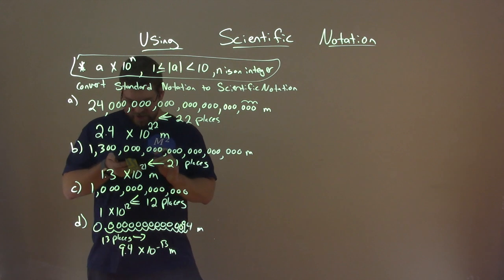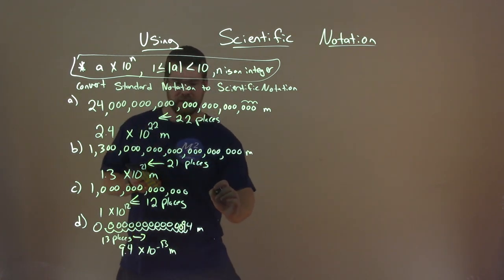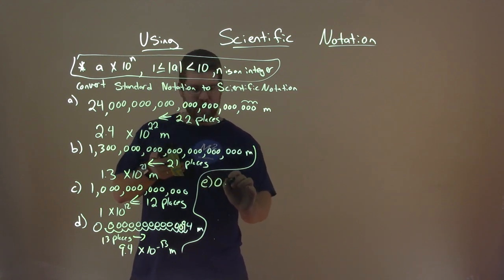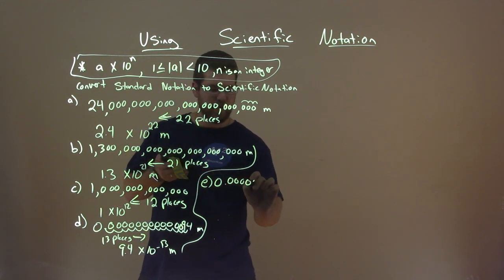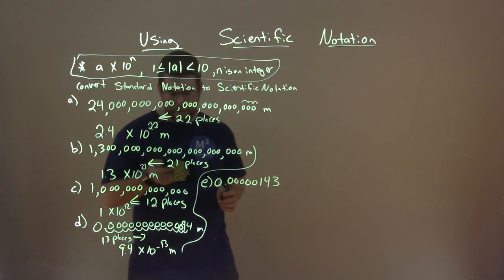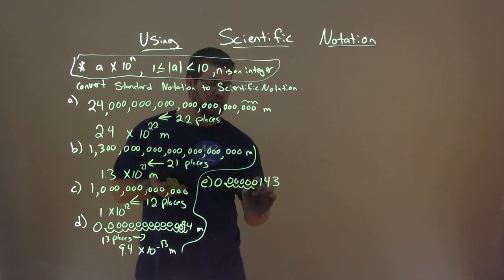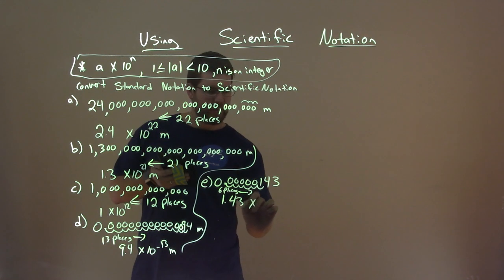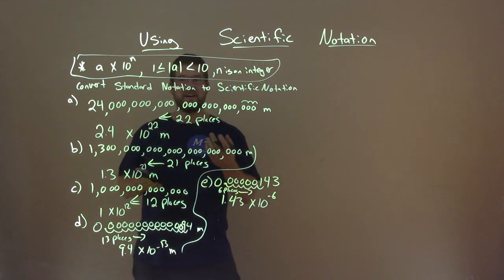The last question here says the probability of being struck by lightning in a single year — it's a low probability. E, we have 0.00000143. Moving the decimal 6 places to the right, we get 1.43 times 10 to the negative 6 power. And there we have it — we converted all that to scientific notation.